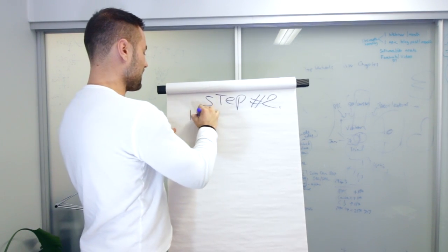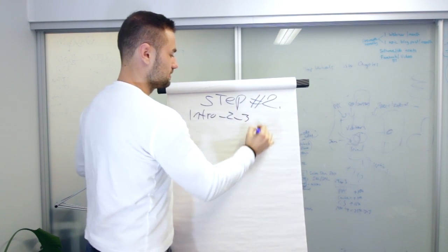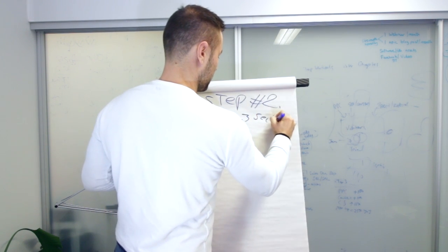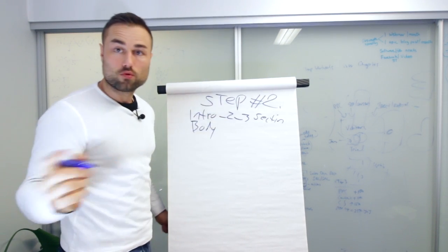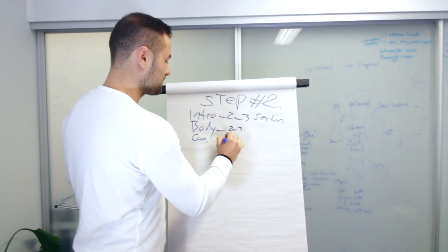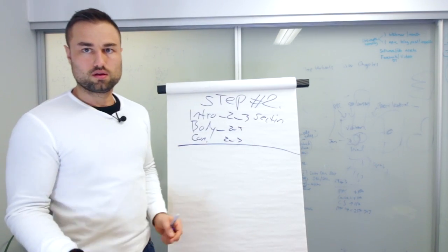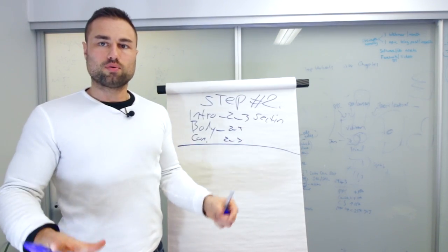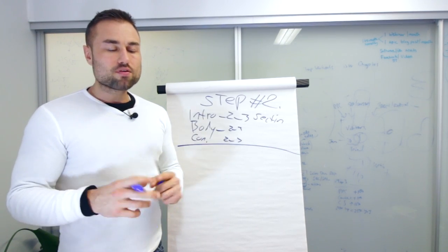So for step two, we know we have our intro, and we know we have two to three sections of the intro planned out. We know we have that for the body, and we know we have that for the conclusion. Now, in step two, what's really important is your environment. You gotta understand how your body is wired, and how your body functions. Everybody's different.